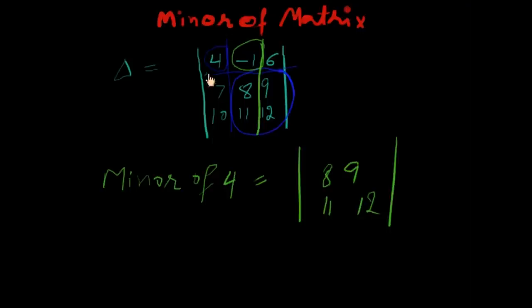And this row, and minor of minus one will be seven, ten, nine, twelve.